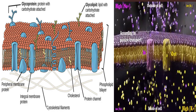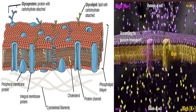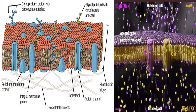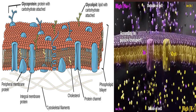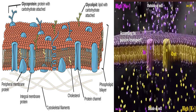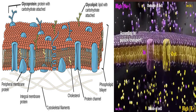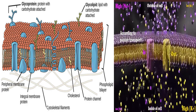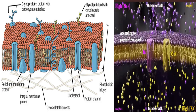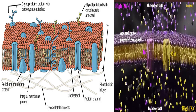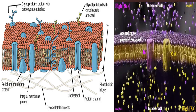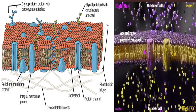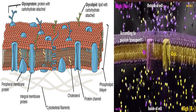Thus, the membrane surfaces that face the interior and exterior of the cell are hydrophilic. In contrast, the middle of the cell membrane is hydrophobic and will not interact with water. Therefore, phospholipids form an excellent lipid bilayer cell membrane that separates fluid within the cell from the fluid outside of the cell.